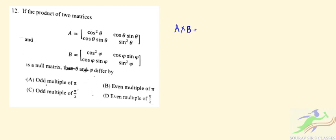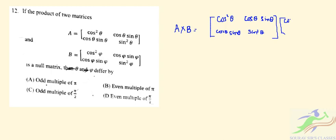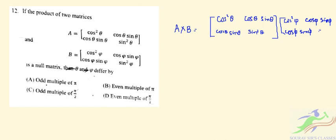So A multiplied by B — in A we have cos²θ, cosθ sinθ, cosθ sinθ, sin²θ, and in B we have cos²φ, sinφ sinφ. This product is a null matrix.